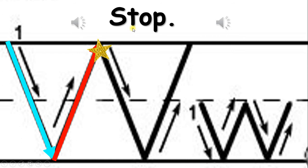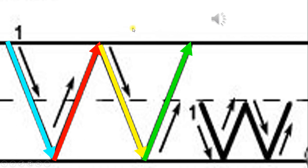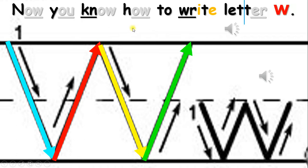Start at the top. Go down. Stop. Go up. Stop. Go down. Stop. Go up. Stop. Now you know how to write letter W.